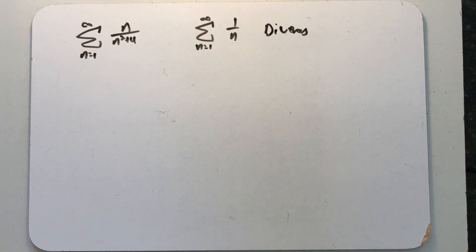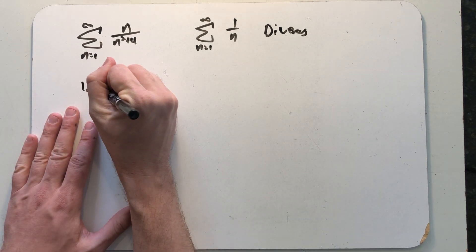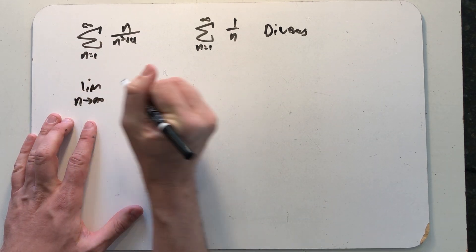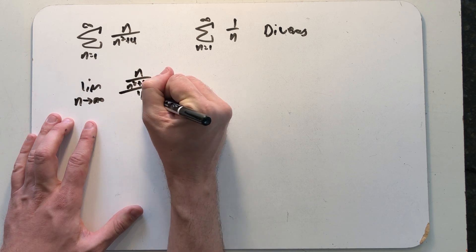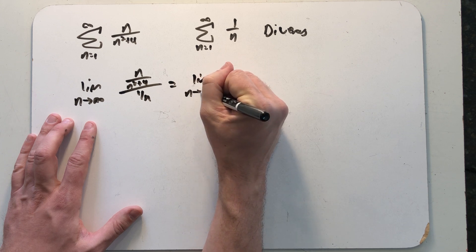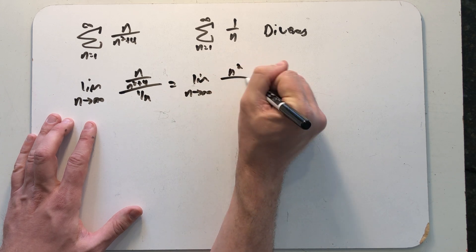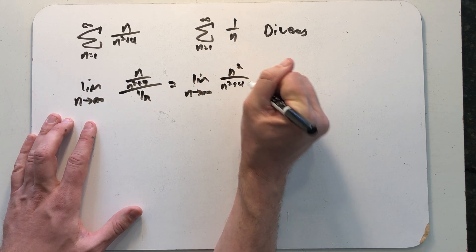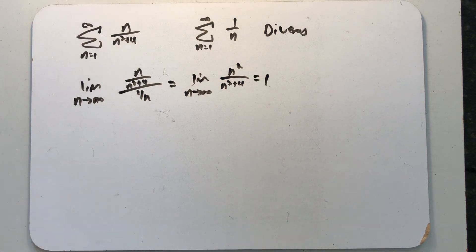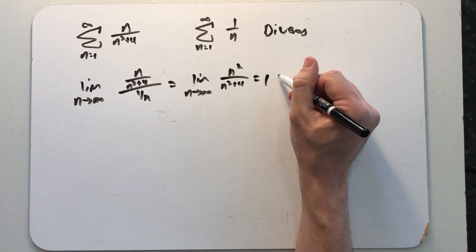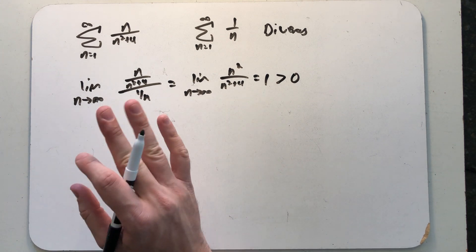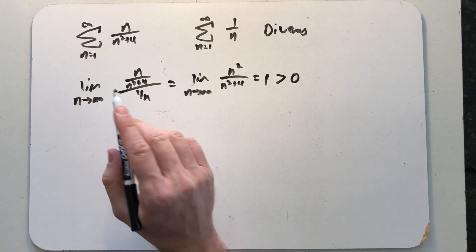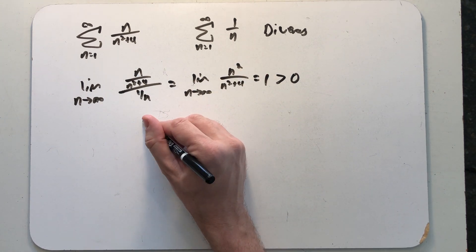So the limit as n approaches infinity of the nth term of one of the series over the nth term of the other. I get 1 and in the conclusion of the limit comparison test we're told that if we get a value that is larger than zero then the series we're comparing have to have the same behavior. So both of these series must diverge.